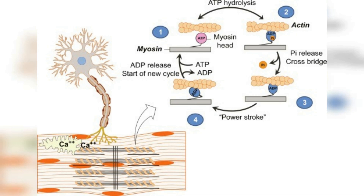Once myosin heads are attached to actin, they undergo a conformational change that pulls the actin filaments towards the center of the sarcomere. This process is known as the power stroke, and it is driven by the release of ATP and inorganic phosphate from the myosin heads. As new ATP molecules bind to the myosin heads, the cross-bridges detach from actin, and the myosin heads return to their original position.